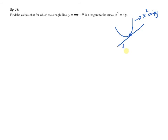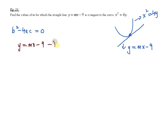Let's say this point here. This is the straight line y equals mx minus 9. If the straight line is a tangent to the curve, then the condition is b squared minus 4ac equals 0. The process is the same: list the straight line y equals mx minus 9 as equation 1, and the curve x squared equals 4y as equation 2. Now we want to eliminate y, so x squared equals 4 times (mx minus 9).